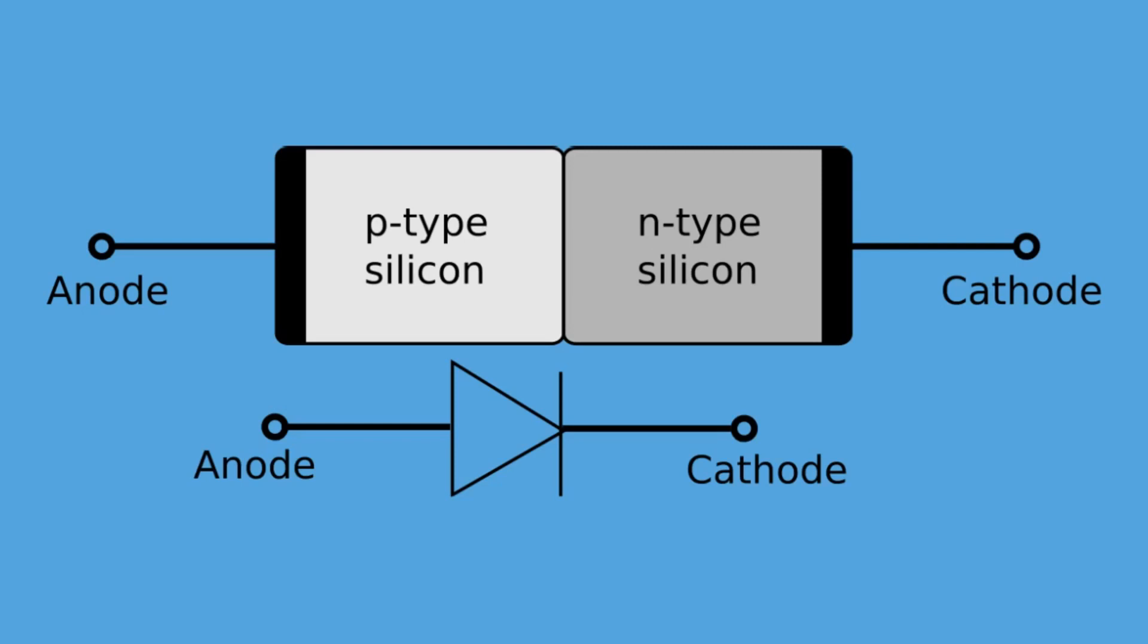Bipolar transistor. As we have seen, diodes are made up from two pieces of semiconductor material, either silicon or germanium, to form a simple p-n junction diode.